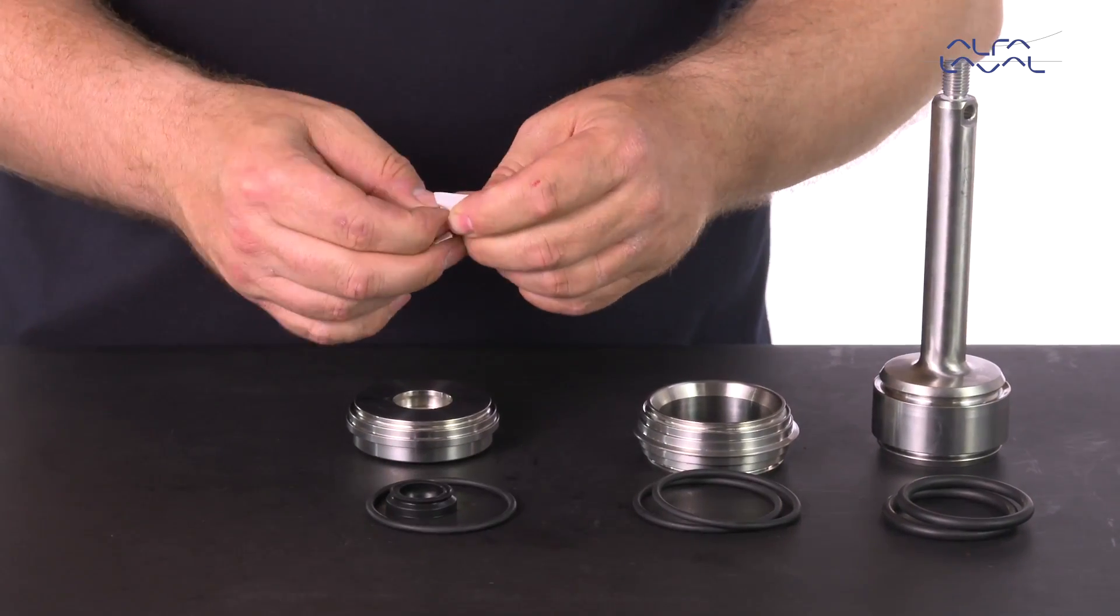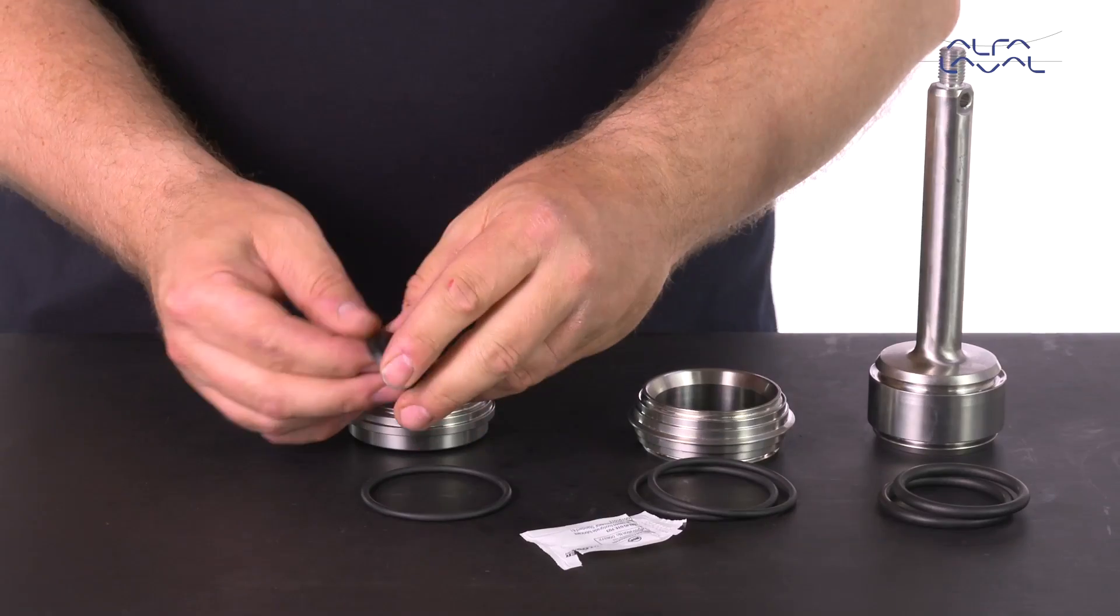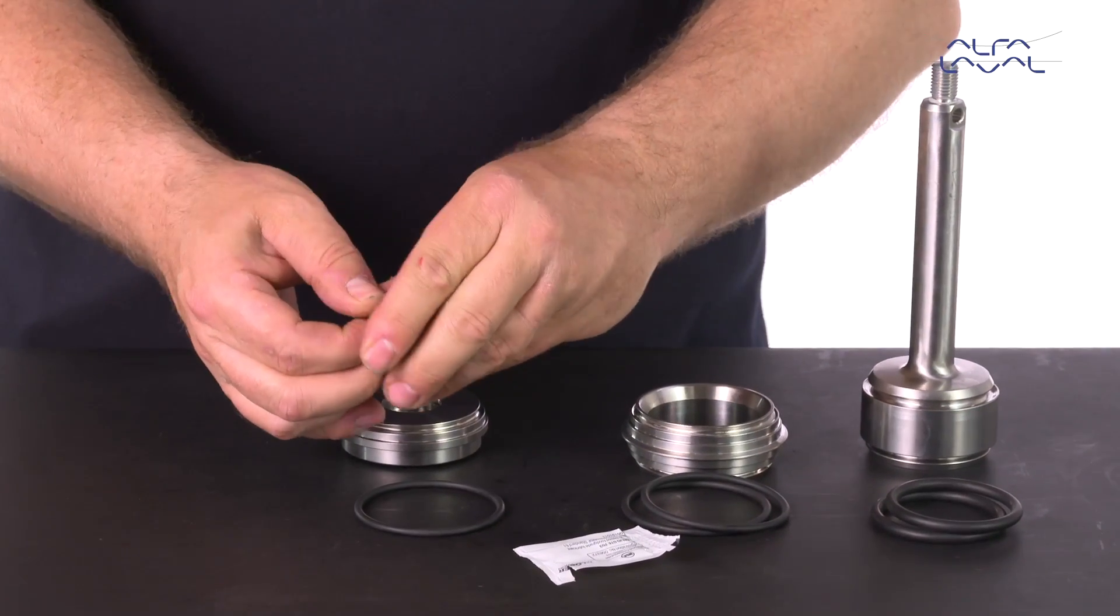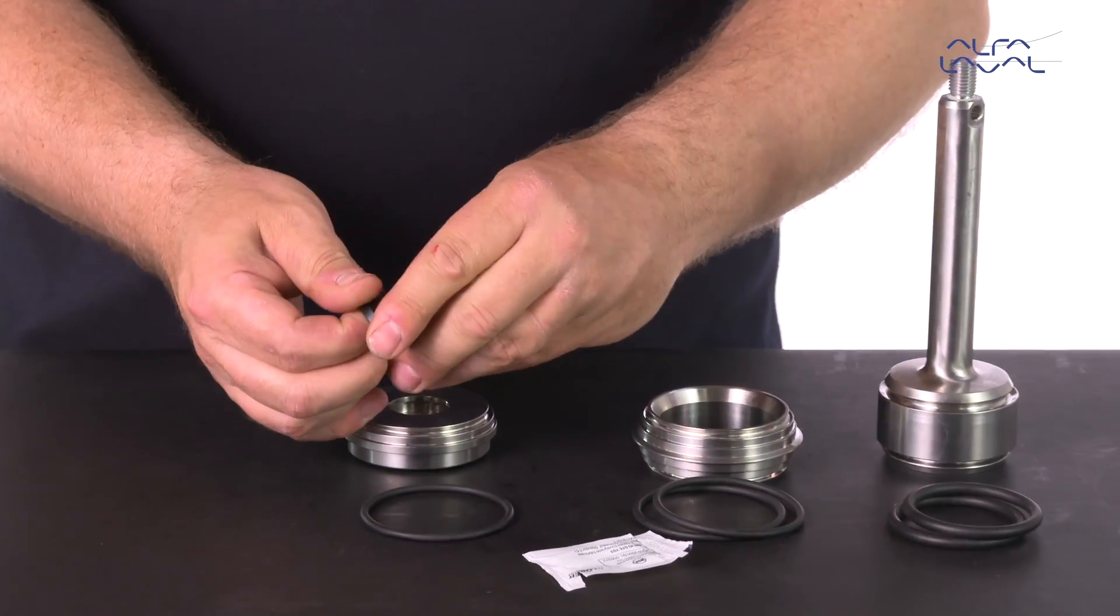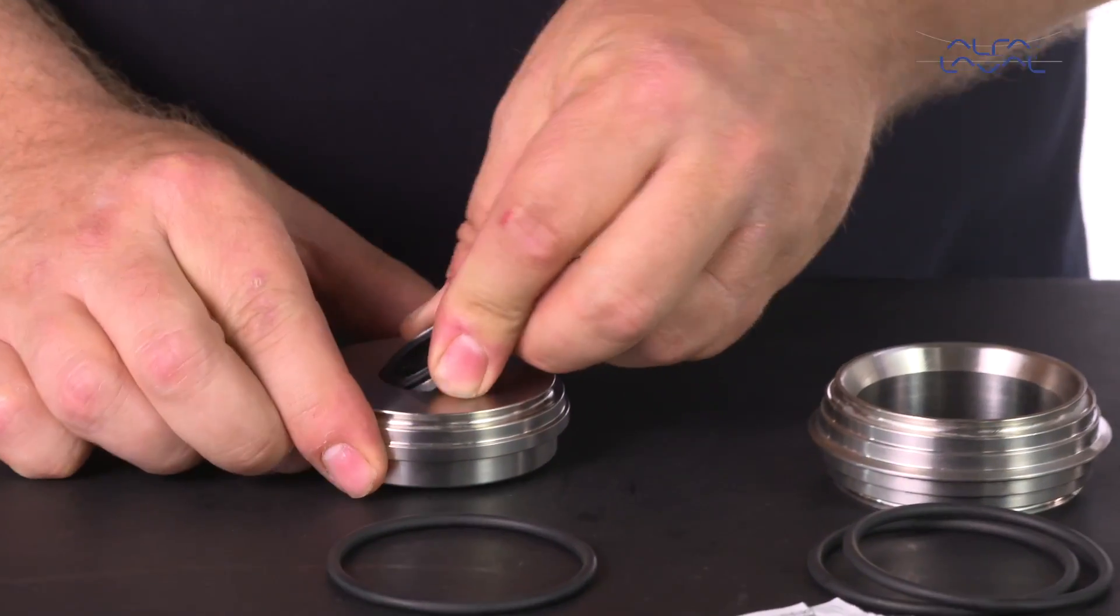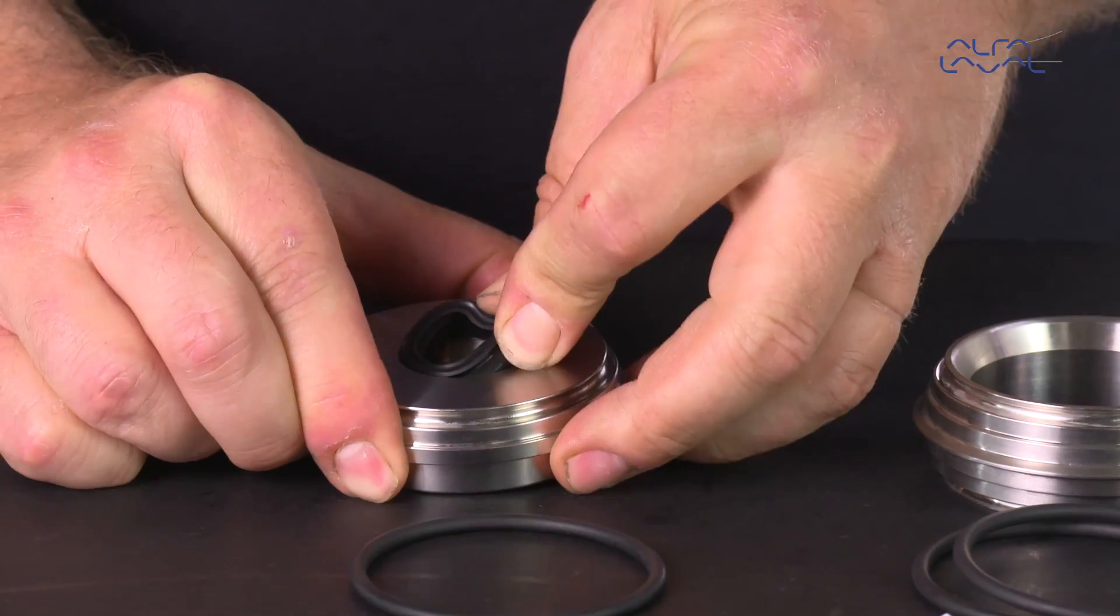After dismantling the valve, remove all product wetted seals. We are now ready to replace the seals starting with the lip seal. First, lubricate and mount the lip seal in the sealing element.